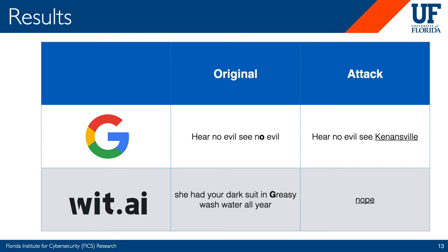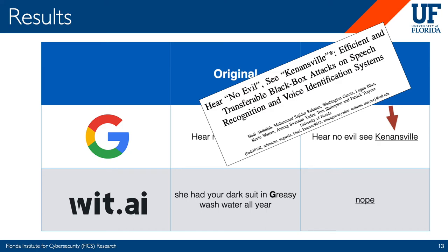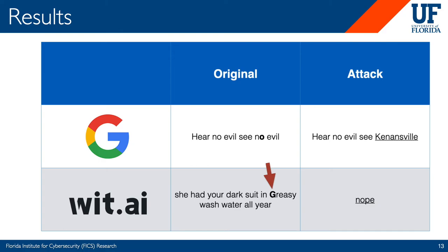This slide shows the impact of our attack on model transcription. For Google, when we perturb the 'O' in 'No Evil,' it forces the Google Speech API to output 'Kenansville' instead of the original phrase 'No Evil' — and that's where our paper got its name: 'Hey No Evil, See Kenansville.' We also see an extreme case for Wit, where perturbing a single 'G' ruins the entire transcription, forcing the model to output just the single word 'NOPE.'